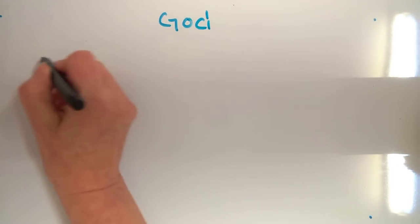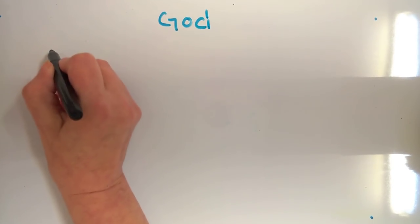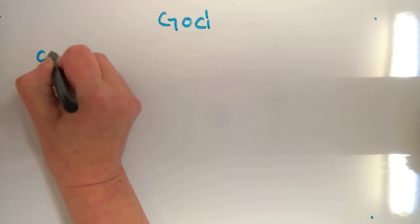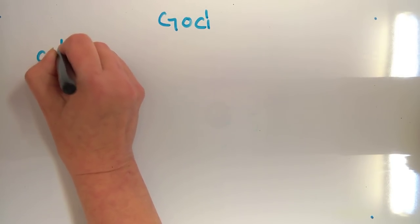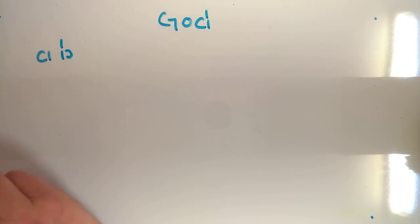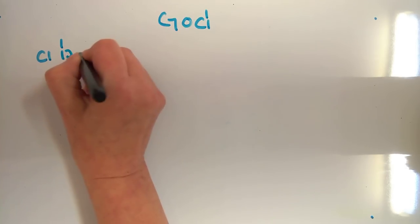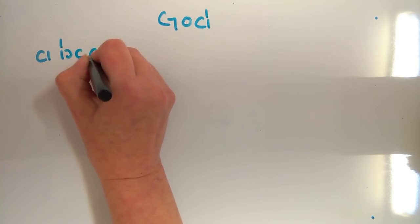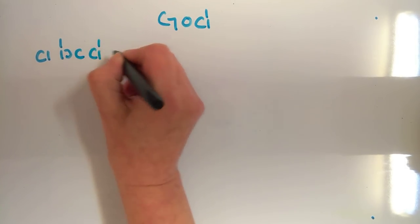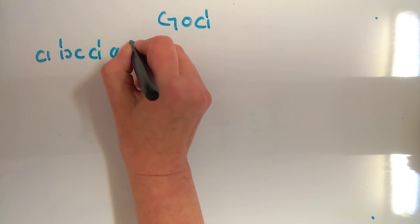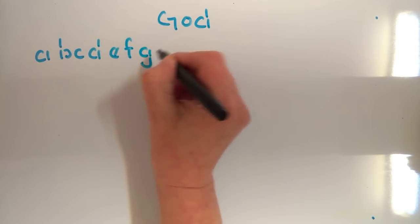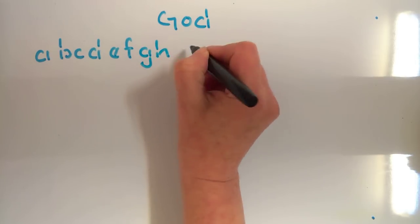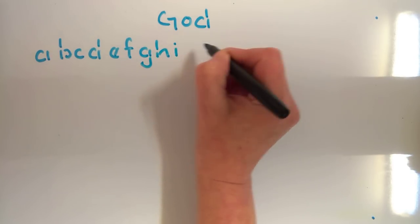You can see how each letter is made of a broken portion. So we've got a curve and a line to create the A, two broken lines and a curve to make B, C, D, E, F, G, H, I, J.